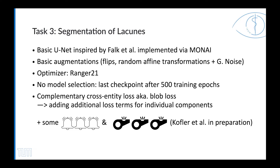We do not conduct model selection; instead we use the last checkpoint after 500 training epochs. Complementary cross-entity loss, better known as blob loss, serves as loss function. It adds terms for individual components plus some bells and whistles, promising a better detection of small blobs. Further details will soon be available via Koffler and colleagues, in preparation.